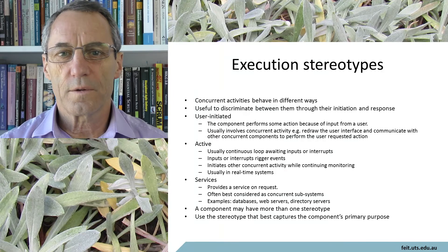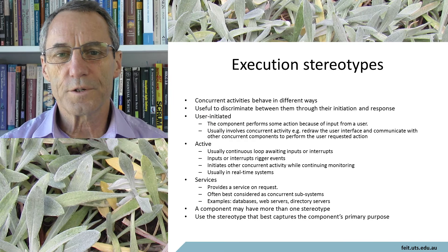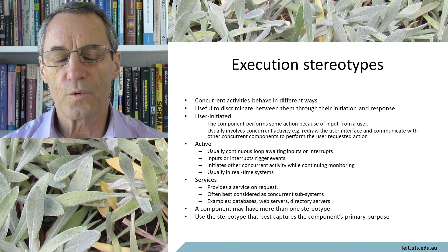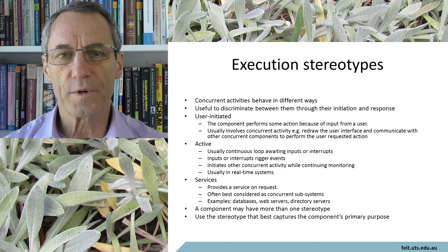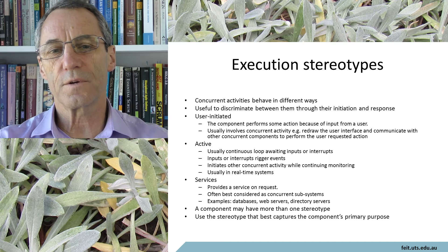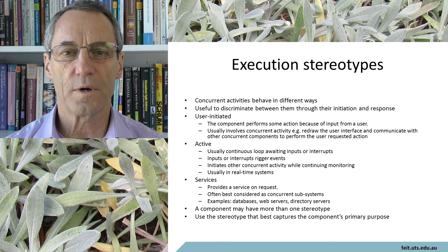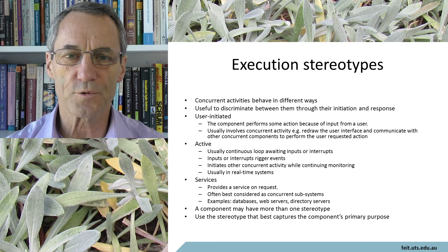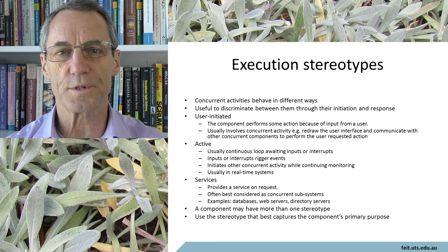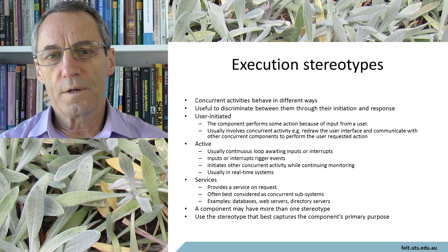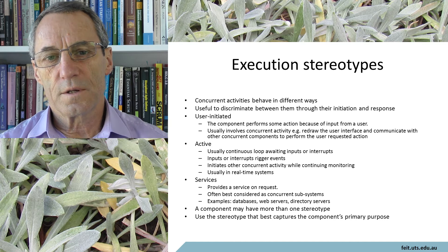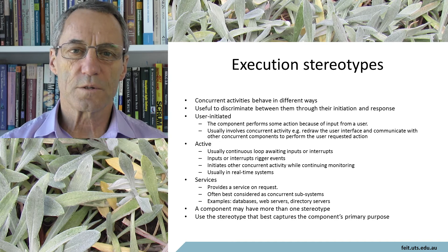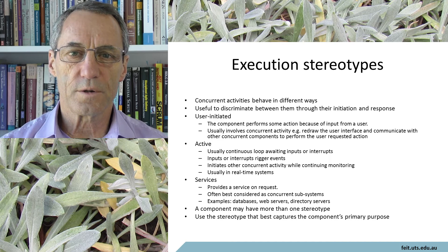I'd like to have a brief look at the notations that you might use when you're drawing up an execution architecture. That is, you've got a diagram in front of you — it may be a UML diagram, but it may also be just boxes and arrows. In an execution architecture, there are some differences in some of these components, and we need some conventions about how to show those differences.